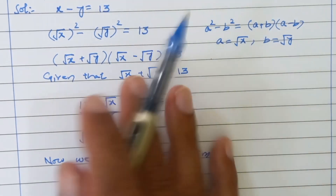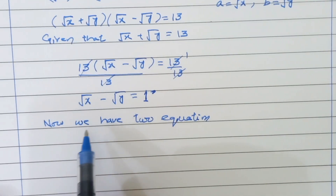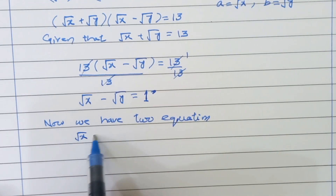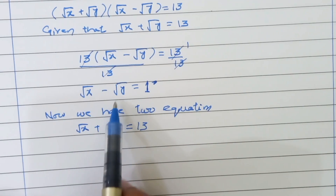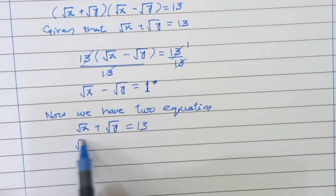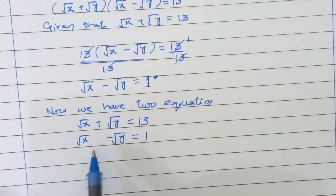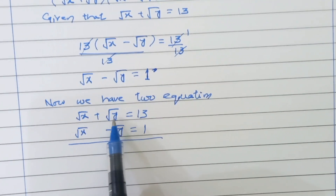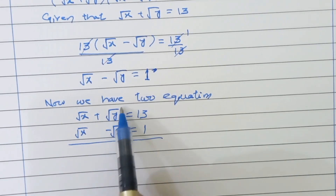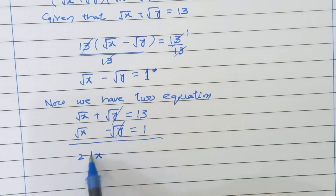Now we have two equations. The first equation that is given: root x plus root y is equal to 13. And the second equation: root x minus root y equals 1. Adding these two equations, plus root y and minus root y cancel out with each other. Adding root x plus root x gives us 2 times root x.